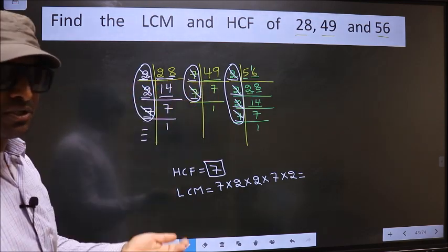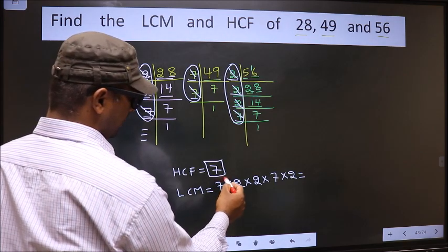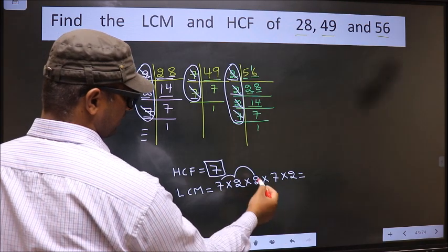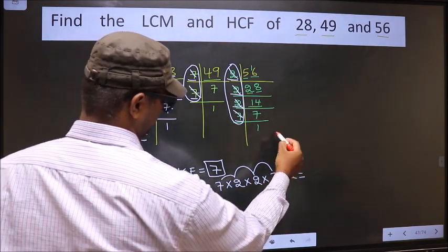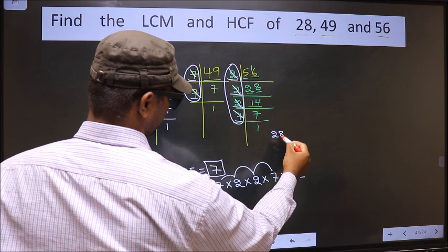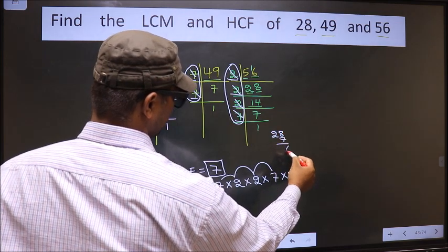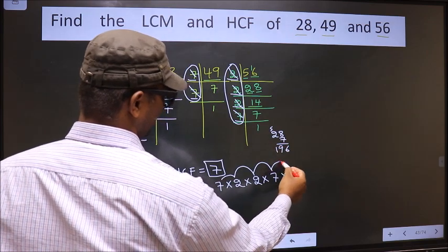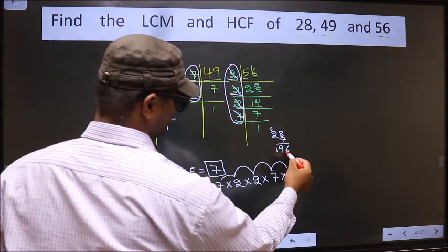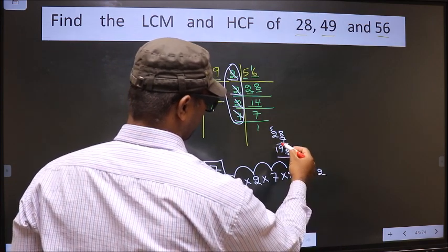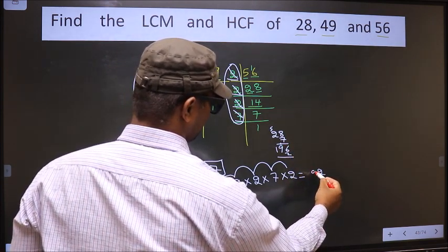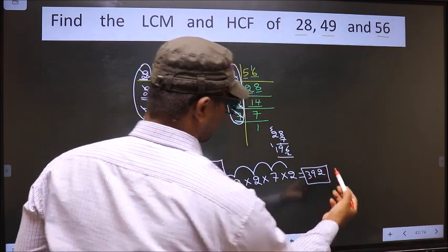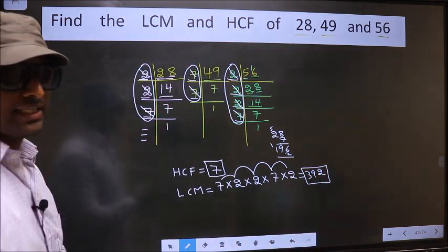Okay, so our LCM is 7 into 2 is 14, into 2 is 28, into 7. 7 times 8 is 56, 6 times 5 is 7 times 2 is 14, plus 5 is 196, into 2. 2 times 6 is 12, 2 times 1 is 2, 9 times 2 is 18, plus 1 is 19, 2 times 2 is 1, 2 plus 1 is 3. So 392 is our LCM.